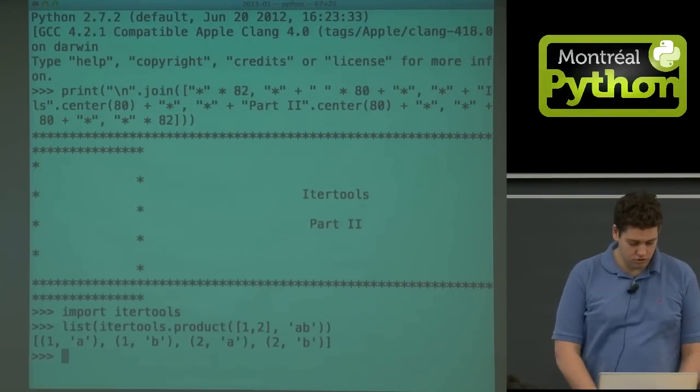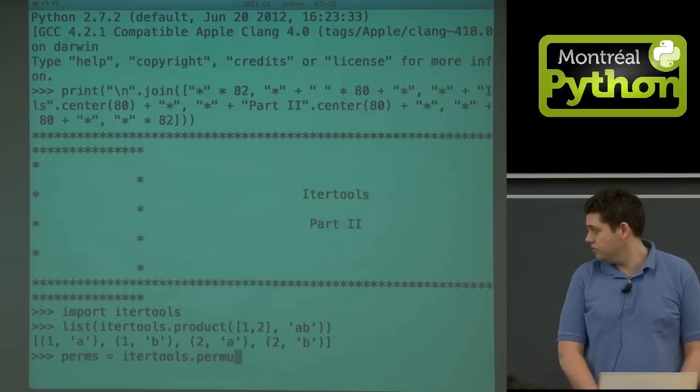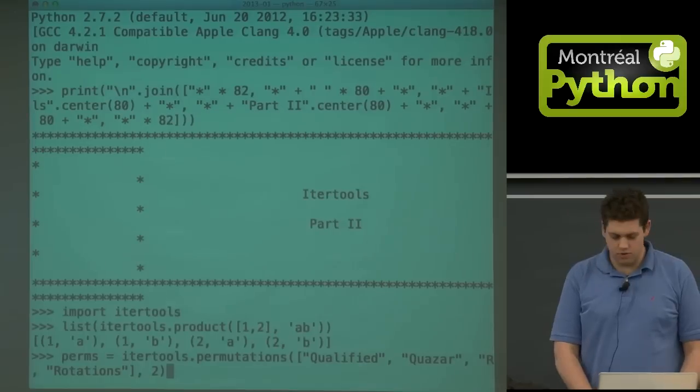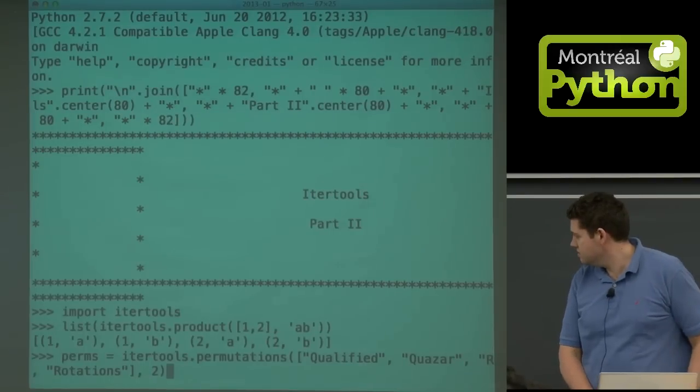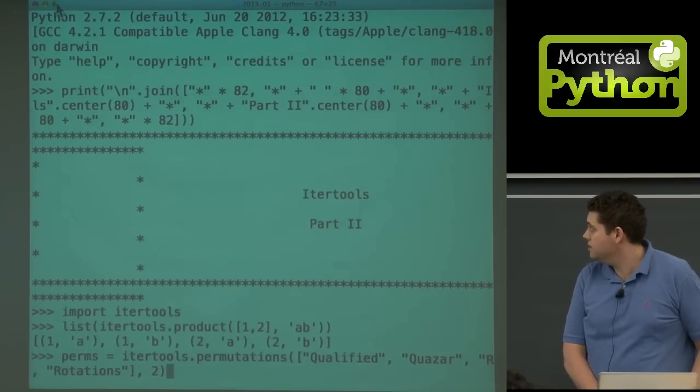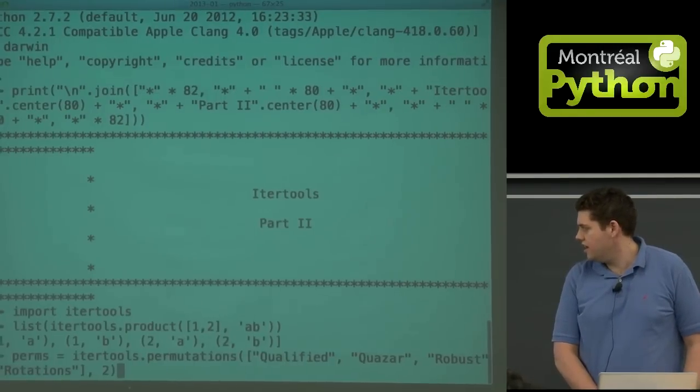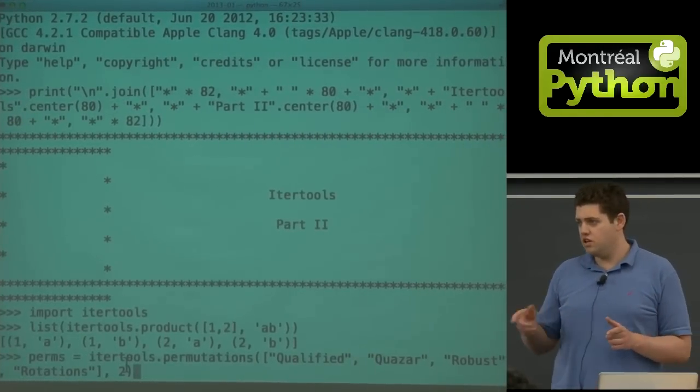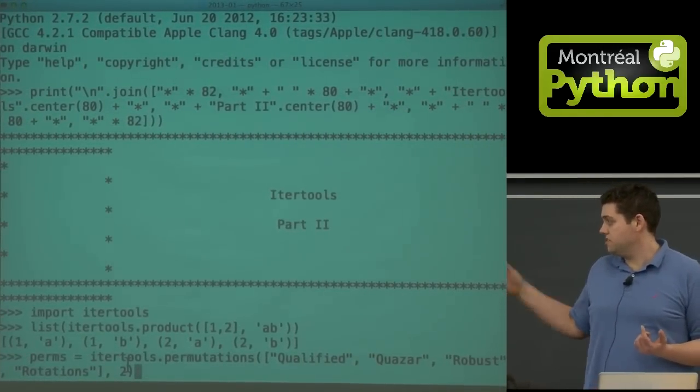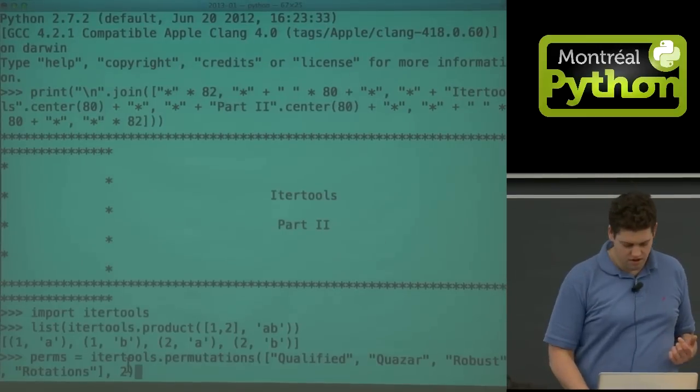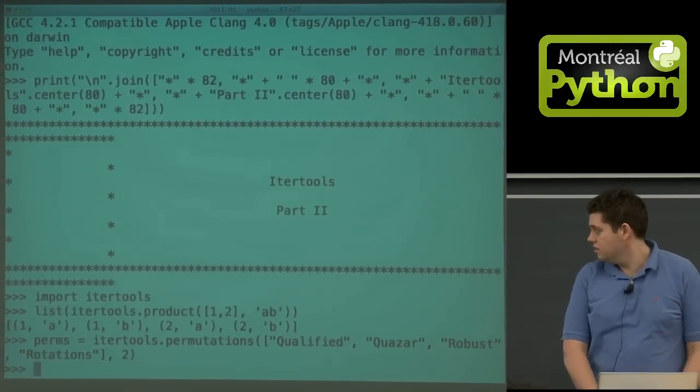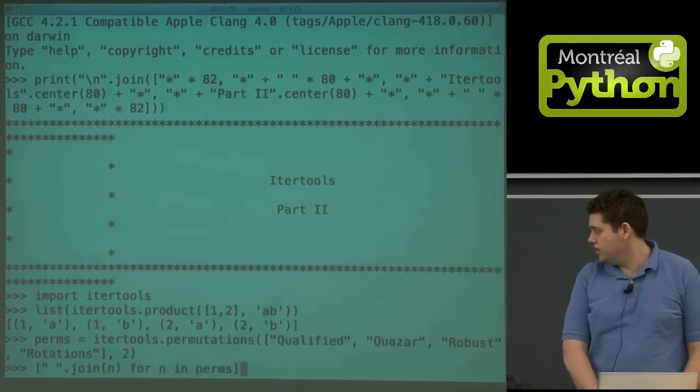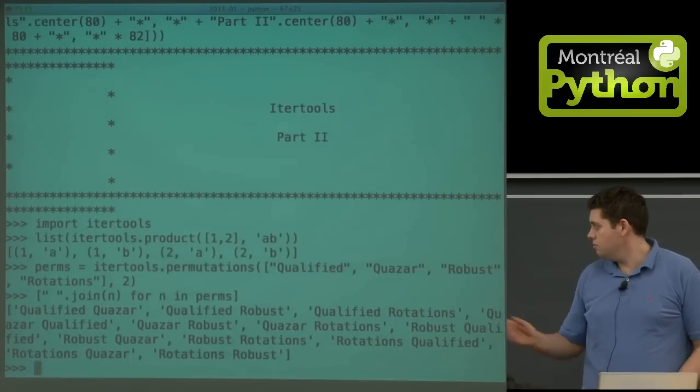You can also do permutations. What you do is give a list of things—that list got cut off, sorry, if I make this full size there we go—give a list of things and how many items you want in your permutations, and it'll give you all the permutations of two items of this list, and then if I join it, boom.